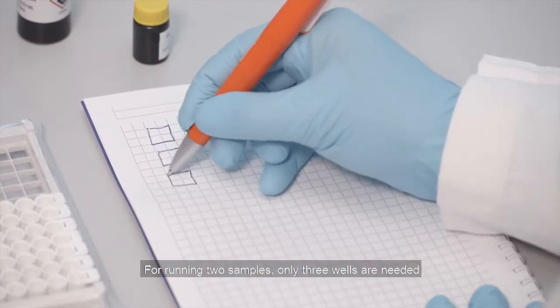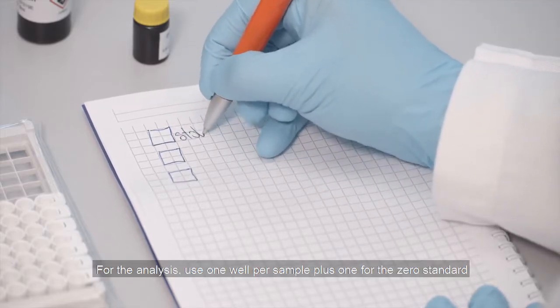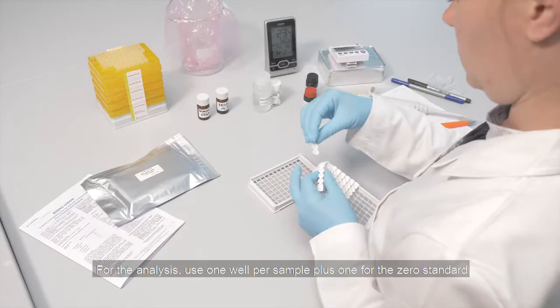For running two samples, only three wells are needed. For the analysis, use one well per sample plus one for the zero standard.